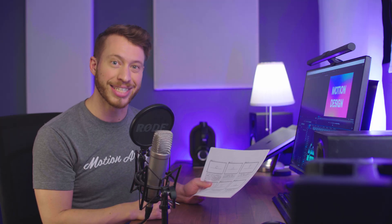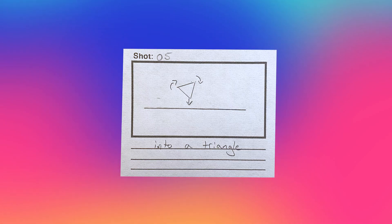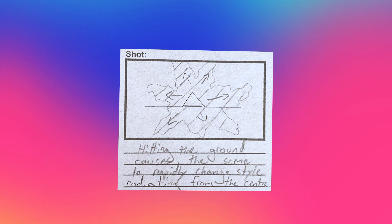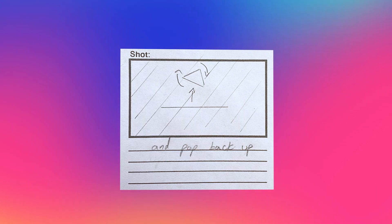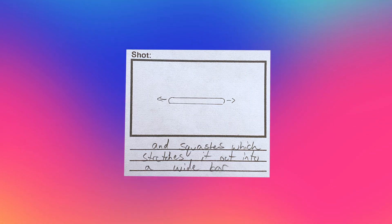Here's my example: A ball starts resting in frame. The scene is very basic — a single line to indicate the ground and the circle which is our point of focus. It squashes down in preparation to bounce, and then jumps up into the air. It then morphs into a triangle, which then hits the ground. Hitting the ground causes the scene to rapidly change style, radiating out from the center. The triangle continues to squish and pop back up, morphing into a square. The square hits the ground and squashes, stretching it out into a wide bar. This bar animates in color from left to right, in the same way that After Effects renders. This bar then duplicates by splitting in a liquidy, gooey fashion, and then morphs into the final title.